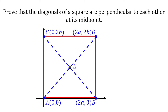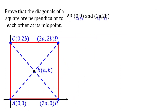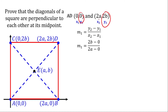Now let's prove that the diagonals are perpendicular at the midpoint. Let's find the slope of AD. We'll use the slope formula: slope of line 1 is 2B minus 0 over 2A minus 0. Simplifying further, we have B over A. So B over A is the slope of segment AD.